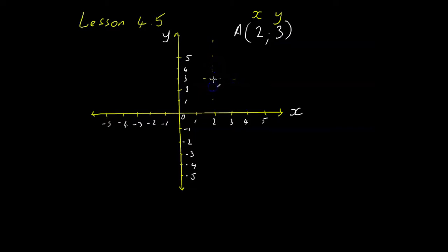The point at which these two lines meet is called an intersection and that's where our actual point is going to be. So the coordinate point of A is going to sit here between 2 on the x-axis and 3 on the y-axis.